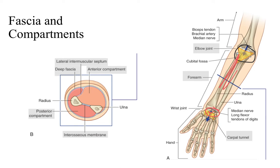Just like other limb components, the forearm has compartments. It has a layer of skin, then a layer of superficial fascia, and then a deep fascia that invests itself between compartment layers known as intermuscular septa. The forearm is divided into the anterior compartment — the hairless compartment facing forward — and the posterior compartment facing the posterior part of the body. The posterior compartment also wraps around laterally to the radius, giving it a lateral component, while the anterior compartment has a slight medial component.